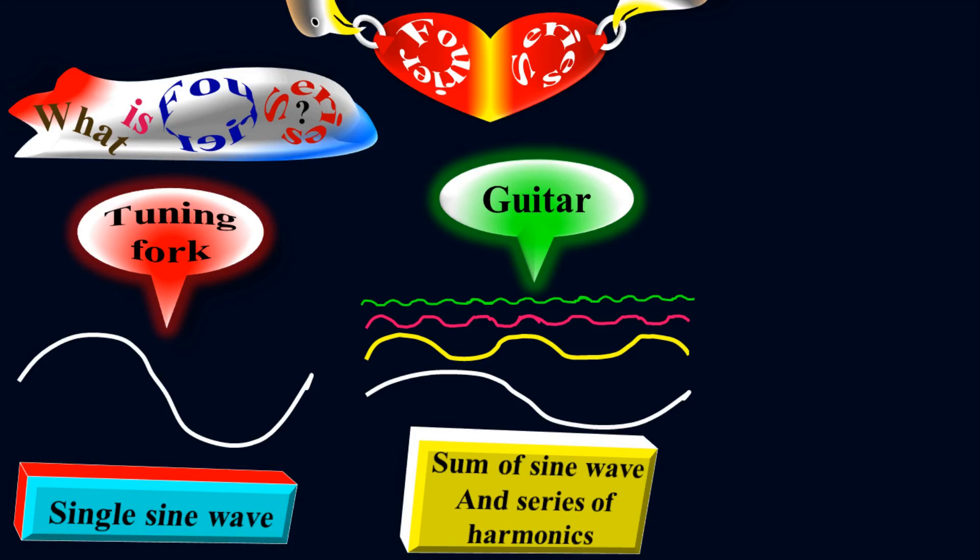In this case, the frequency of the fundamental wave, which is the white one, is two. The frequency of the first harmonic, which is yellow, is four. The frequency of the pink harmonic is eight. The frequency of the green harmonic is 16. So as you go away from the fundamental wave, the harmonics are multiplied by two. That's why harmonics are integral multiples of the fundamental wave.